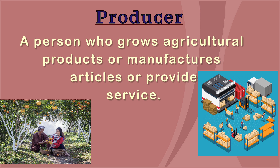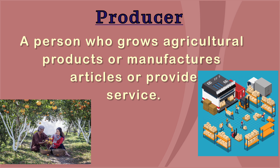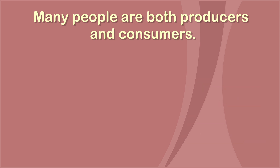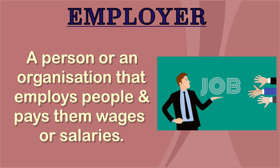A producer manufactures goods or provides services. A person who grows agricultural products like apples or rice, manufactures articles like t-shirts or mobile phones, or provides services like a taxi driver — all are included in the category of producers. Many people are both producers and consumers. For example, a lady can take money she earns by selling coconut water and go to a store to buy goods she needs.